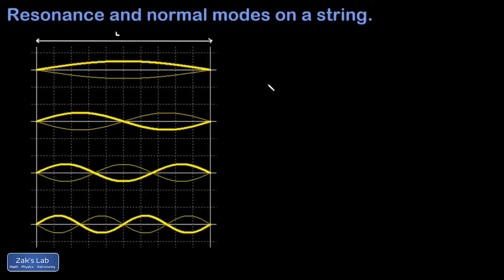In this video, we're looking at resonance and normal modes, in other words, standing waves on a string fixed at both ends. We're going to start with some general results and then finish with several examples to illustrate the sorts of calculations that come up here.